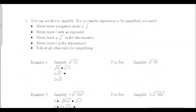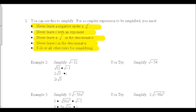Now we're going to look at ways to simplify using powers of i. For a complex expression to be simplified, you must follow these rules: never leave a square root under a radical; never leave an i with an exponent; never leave a radical in the denominator of a fraction; never leave an i in the denominator; and follow all other rules for simplifying.